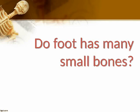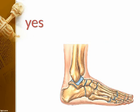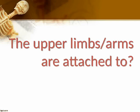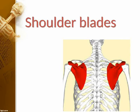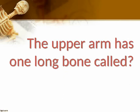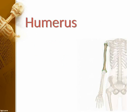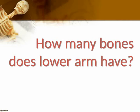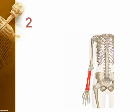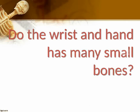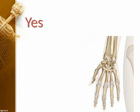Does the foot have many small bones? Yes. The upper limbs — arms — are attached to the shoulder blades. The upper arm has one long bone called the humerus. How many bones does the lower arm have? 2. Do the wrist and hand have many small bones? Yes.